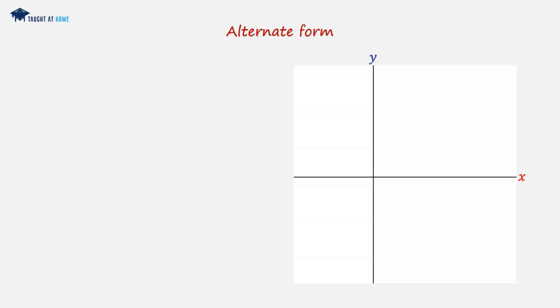So let's look at the alternate form. Say we have a straight line as such, and we are given the gradient, and we're also given a point and a set of coordinates relating to that point.